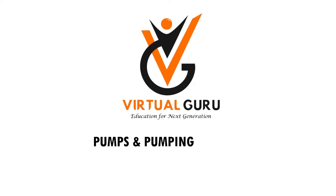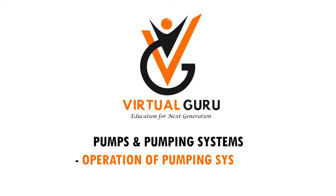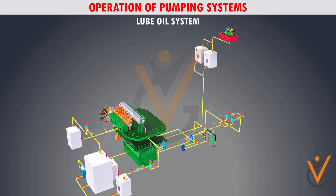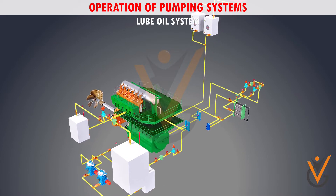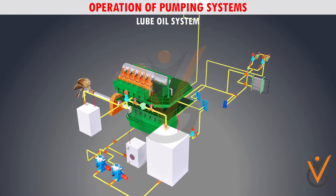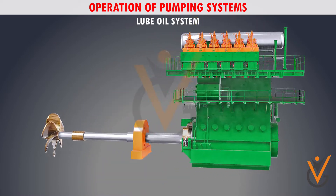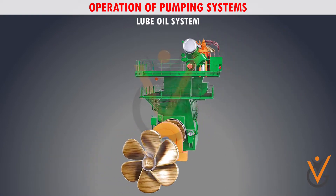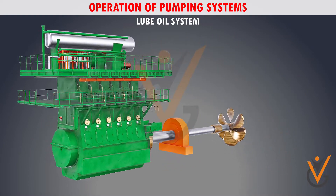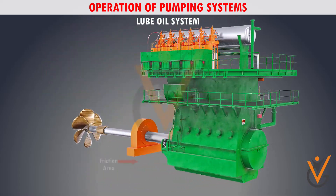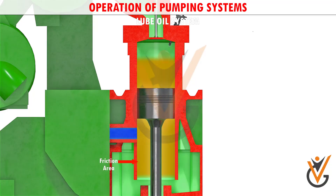Pumps and pumping systems: operation of pumping systems — lube oil system. Lubrication is essential for any kind of machinery on board ships. The lubrication system of an engine provides a supply of lubricating oil to the various moving parts in the engine.